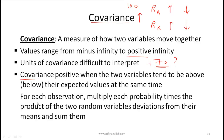To calculate covariance, for each observation you multiply the probability by the product of the two random variables' deviations from their means, then sum everything together. This is best understood through an example.